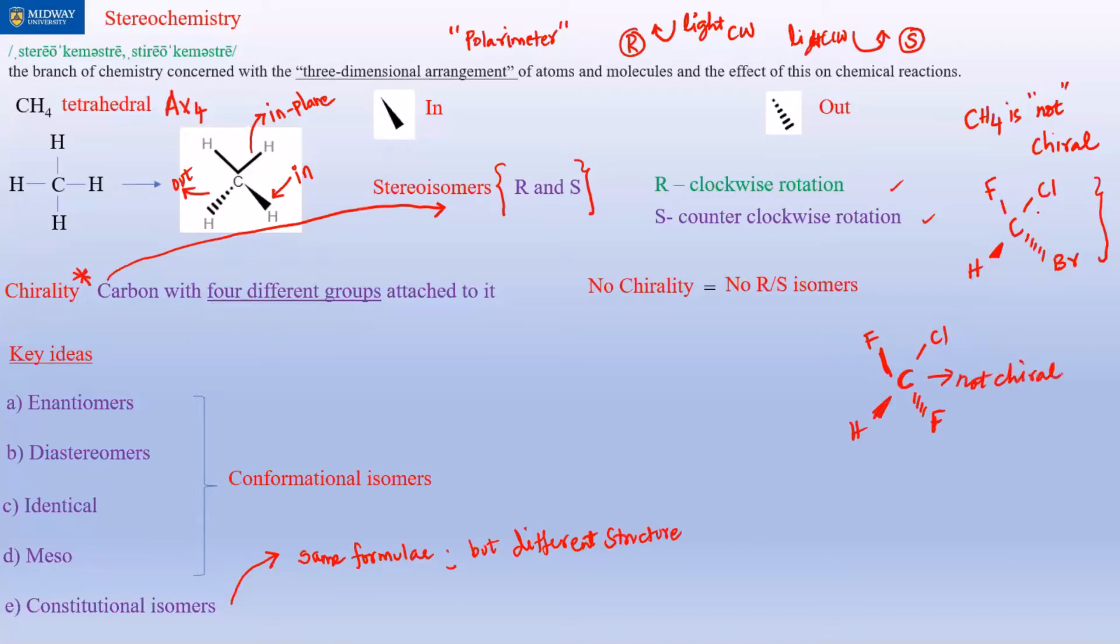This is chiral because it has all four different groups, so we usually indicate the carbon that's chiral with a star.